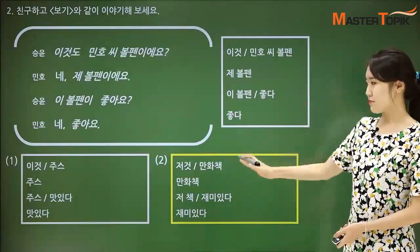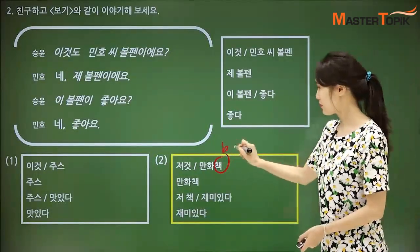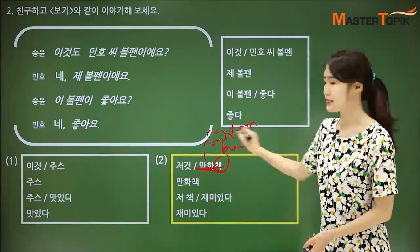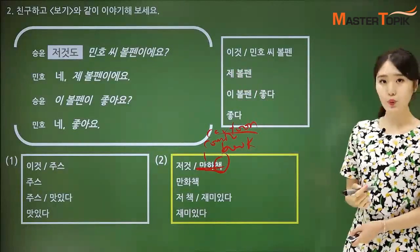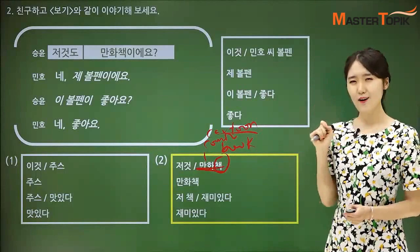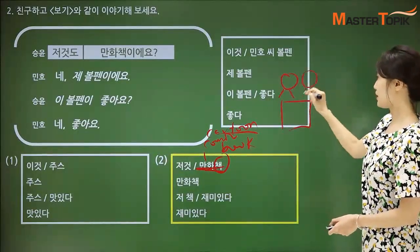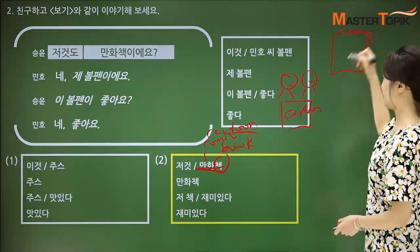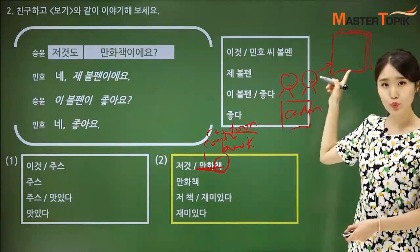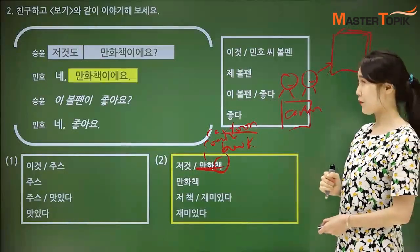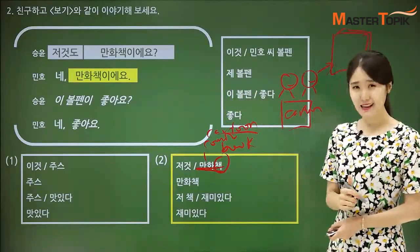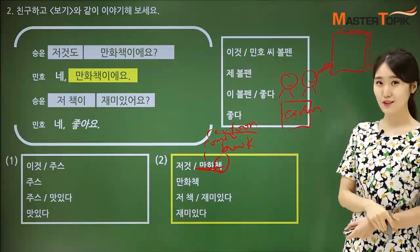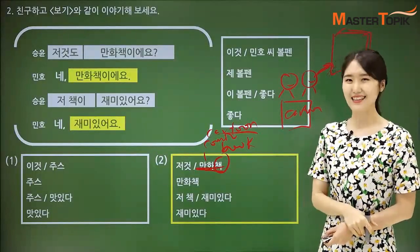Second one: 저것 만화책. You know 책, right? Book. And 만화 is comic book or cartoon, so 만화책 means cartoon. 저것도 만화책이에요 — is that also a cartoon? Two people are looking at this book, and there is also a book over there. 저것도 만화책이에요? 네, 만화책이에요. 저 책이 재미있어요? Is that book fun? 네, 재미있어요. Yes, it's interesting.